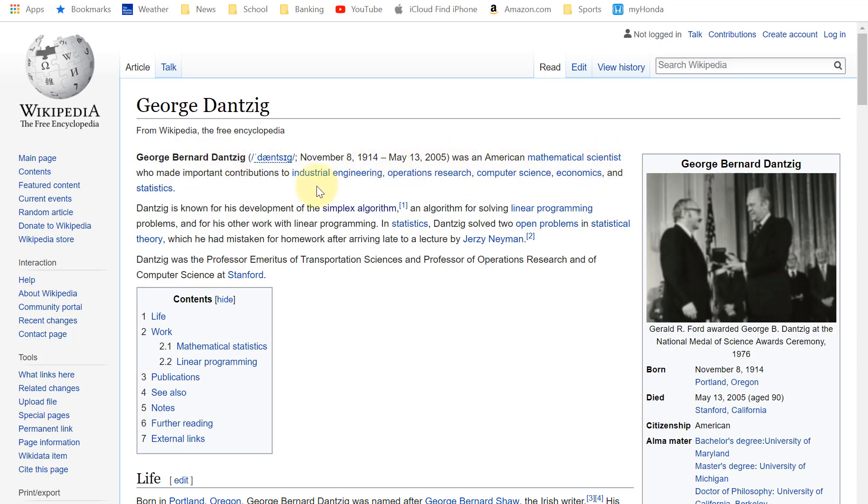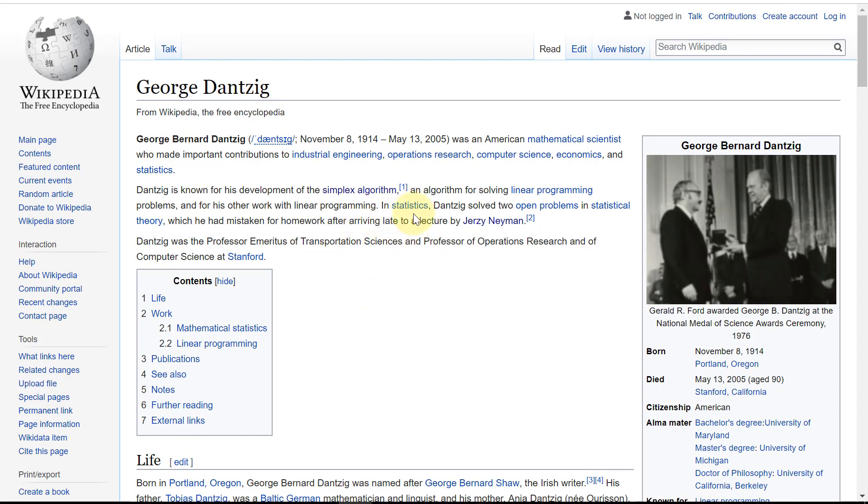He was an American mathematical scientist who made important contributions to industrial engineering, operations research, computer science, economics, and statistics. He's known for the development of the simplex algorithm. Continuing here, we see in statistics, Danzig solved two open problems in statistical theory, which he had mistaken for homework after arriving late to a lecture by Jerzy Neyman. So it's such a great story.